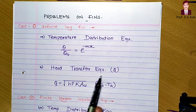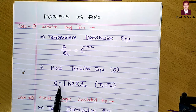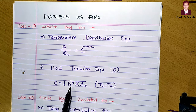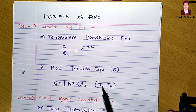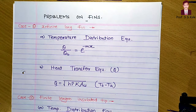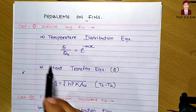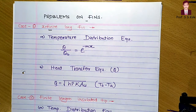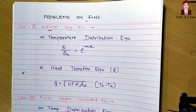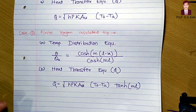The heat transfer equation for the infinite long fin is: Q equals the square root of hPkA, multiplied by (T_0 minus T_a), where T_0 is the base or root temperature of the fin and T_a is the atmospheric temperature. These two formulas apply to the infinite long fin case.